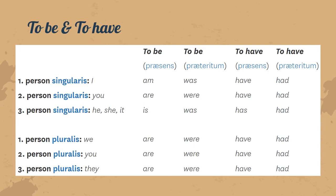The verb 'to have' mostly stays as 'have', but in the third-person singular it becomes 'has', and for the past tense it is 'had' all the way down.